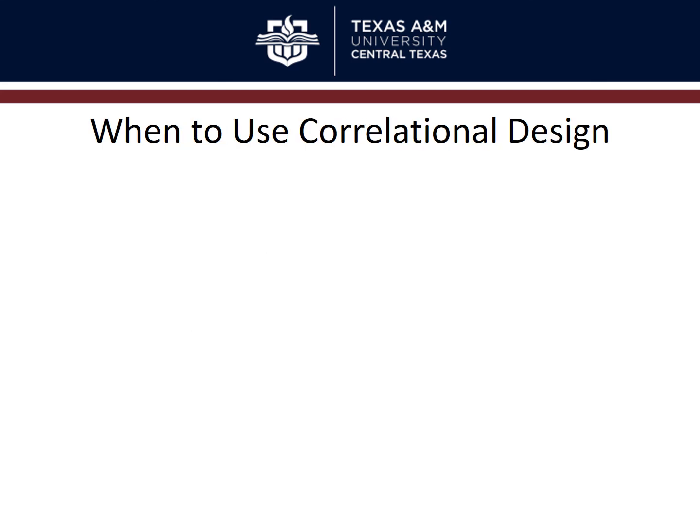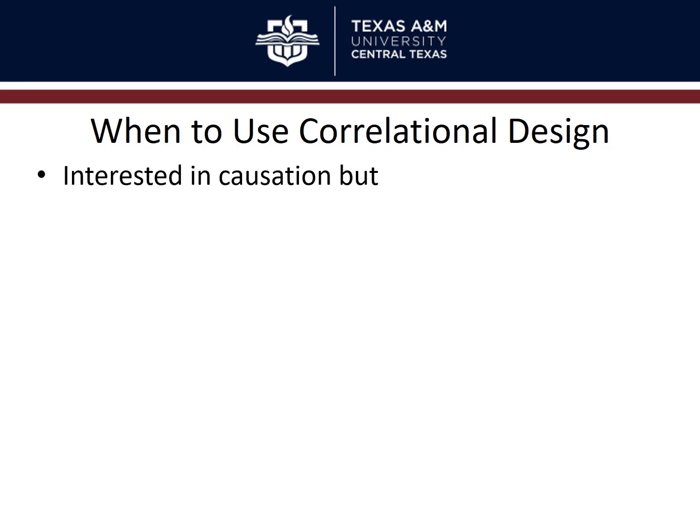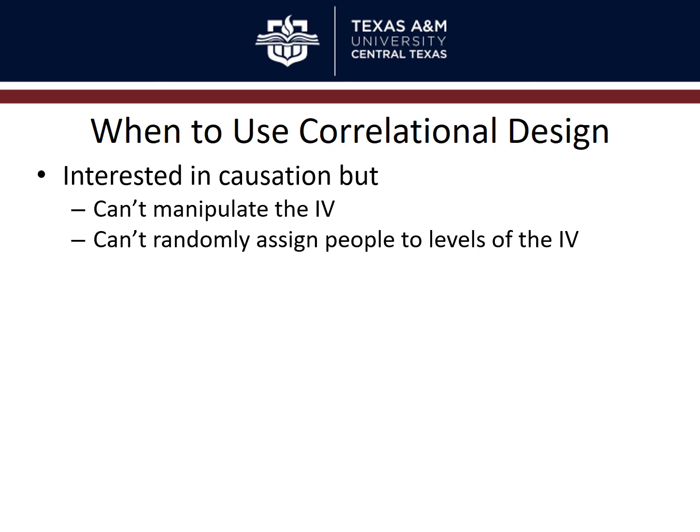When should you use correlational designs? You can use them when you're interested in causation but can't do an experiment — either because you can't manipulate the independent variable for practical or ethical reasons, or because you can't randomly assign people to groups. You ask people about their experiences rather than making them experience things. Random assignment is required for a true experiment; if you can't do that, you're likely looking at a correlational design.